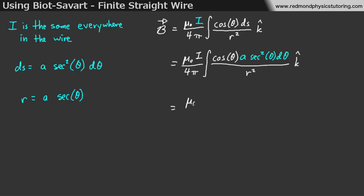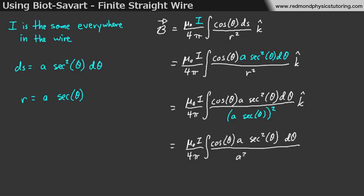That term is squared, so when we expand that, then we notice that we have secant squared theta on the top and on the bottom, so those cancel out. We also have an a on the top and an a squared on the bottom, so we can cancel out an a, leaving us with mu naught i over 4 pi integral of cos theta d theta over a k-hat.